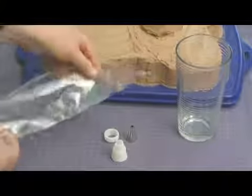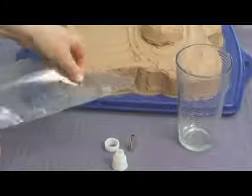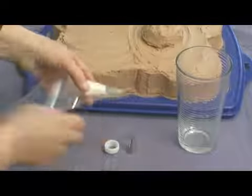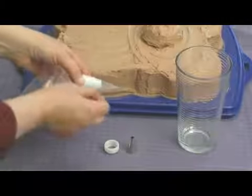Now to prepare the pastry bag, it's closed at the top. It's just a triangle of plastic. So we need to cut off the top so that our coupling will stick out of it.